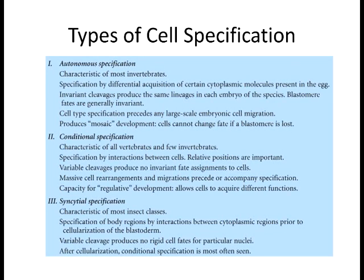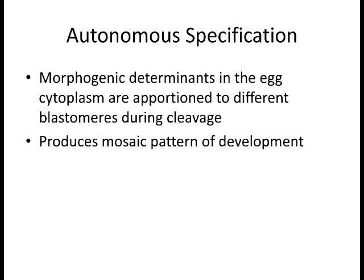Each organism has a main way of how its cells undergo the specification process. These are the three main concepts. In autonomous specification, organisms have the ability early on in their cells to already know what they're going to become. If you separate cells from the others, they'll still become that cell type.